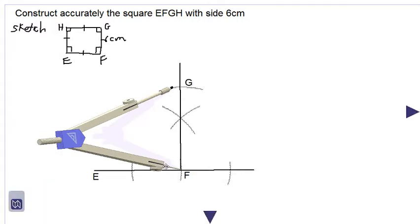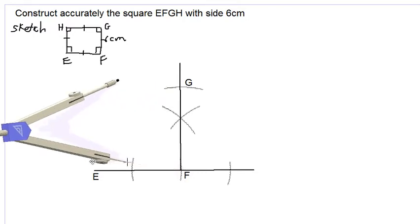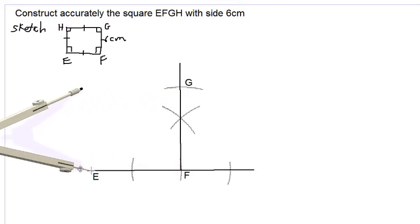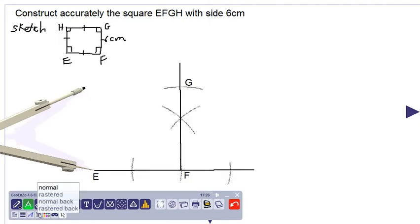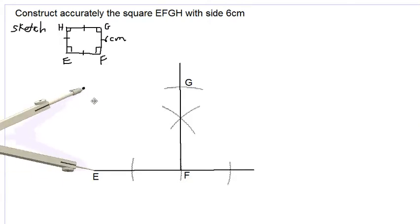We now move the point of the compass to point E without changing the radius, because we want to construct a line parallel to EF that will pass through G. We use our lighter pencil to draw a construction arc as shown.